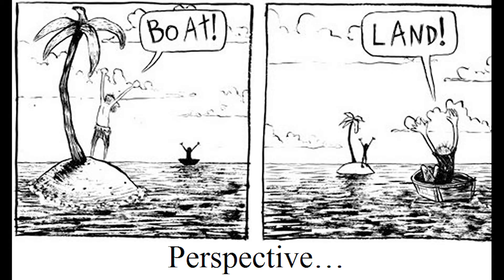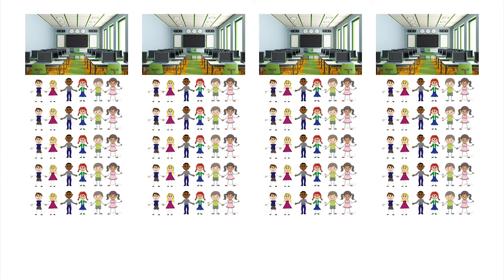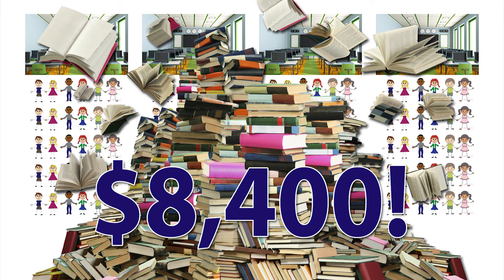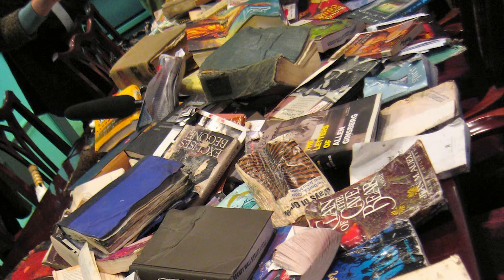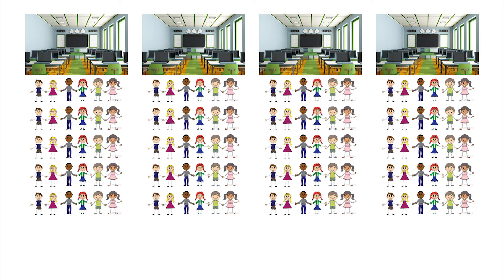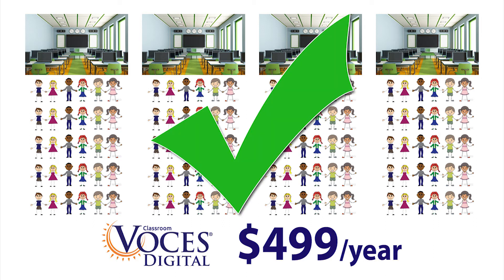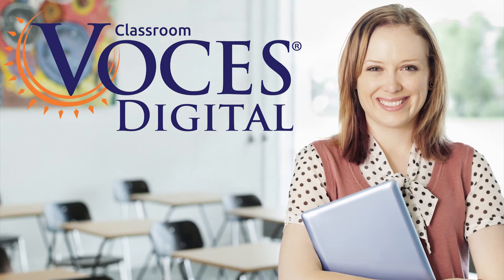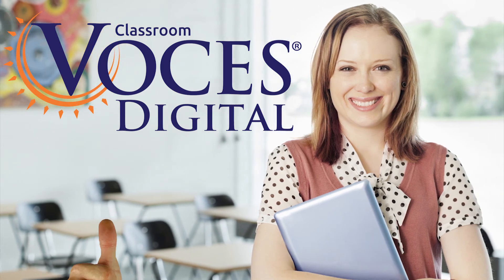To put it into perspective: imagine you taught four classes throughout the day and each class held 30 students. To put a textbook in each student's hands, the bill would be upwards of $8,400 — and that's for cheaper books that may already be a few years old. But with Vosays, the total would only come to $499. That covers everything — every class for that teacher, every student — and content is regularly updated without you having to lift a finger. Let's see a book do that.